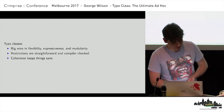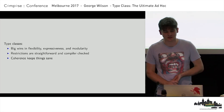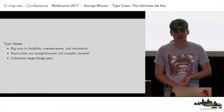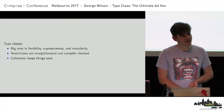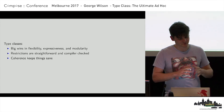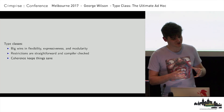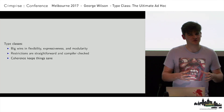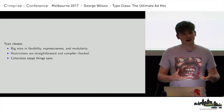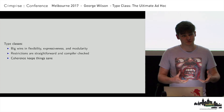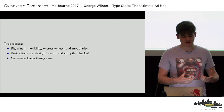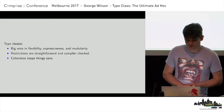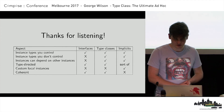So I think type classes have some big wins in flexibility, expressiveness, and modularity over other solutions like interfaces. But they keep things sane with some kind of principles — we've got this property of coherence. We have a few small restrictions to enforce coherence, and those restrictions, most importantly, are compiler checked. So type classes are really good. Thanks.